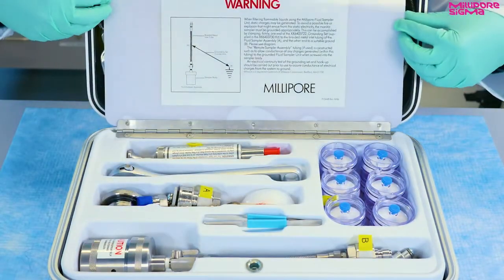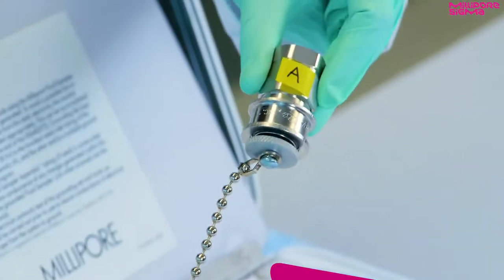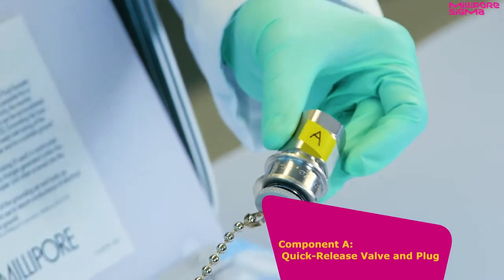Each component is labeled with a letter corresponding to the component parts list on the operating instructions. Component A is the quick release valve and plug.